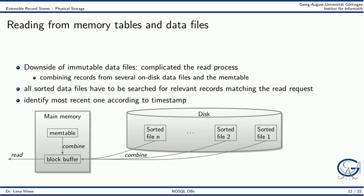Next, we will look at the read process in extensible record stores. Data for a key can now be scattered across different sorted data files on disk. The read process is hence more complicated, because we have to combine records from several on disk data files and potentially the memory table. To identify the most recent version of a key, all sorted data files have to be searched for relevant records matching the key.